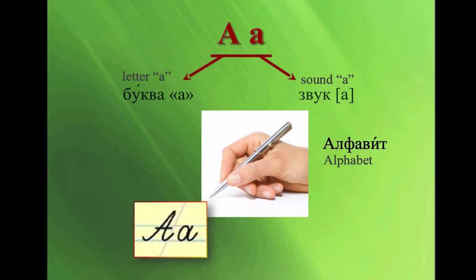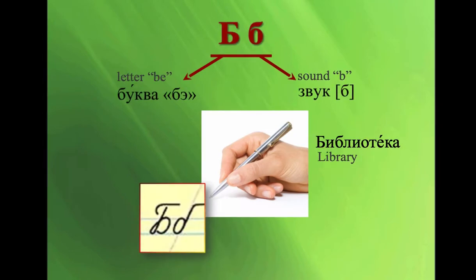So the first letter of the Russian alphabet is А, sound А. Алфавит, alphabet. Б Б Библиотека, library.